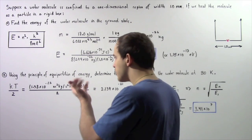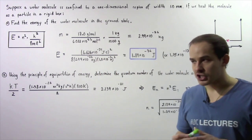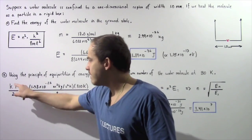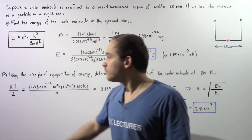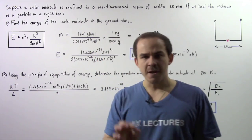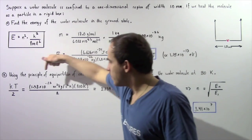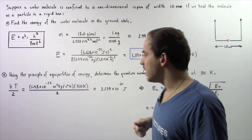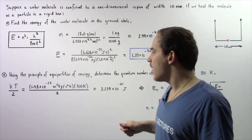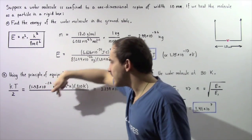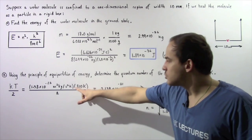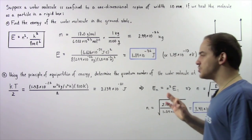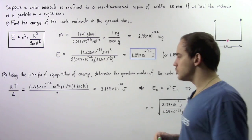According to the principle of equal partition of energy, the average thermal energy of a single molecule is given by K multiplied by T divided by 2, where K is the Boltzmann constant and T is the temperature in Kelvins. The Boltzmann constant is 1.38 times 10 to the negative 23 meters squared times kilograms divided by seconds squared times Kelvins. Multiplying by 310 Kelvins and dividing by 2, we get about 2.139 times 10 to the negative 21 joules.